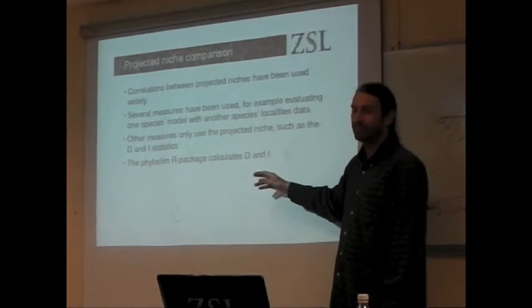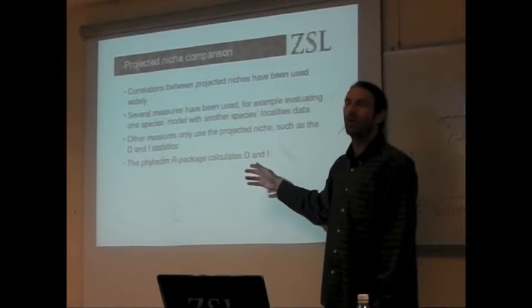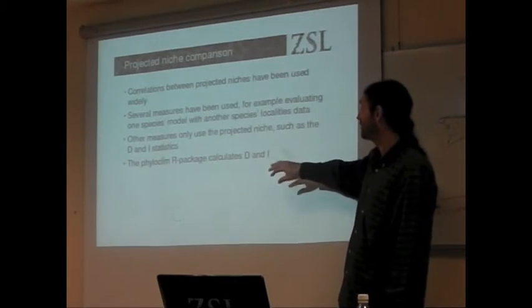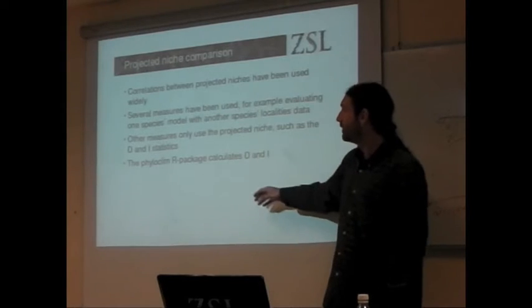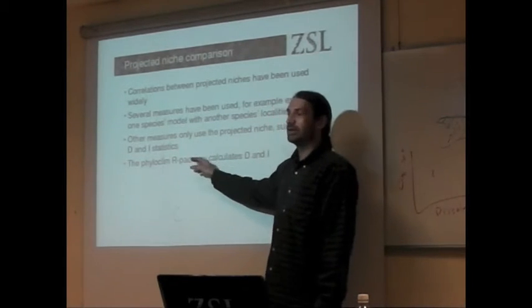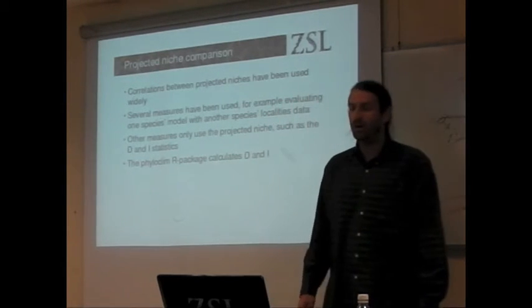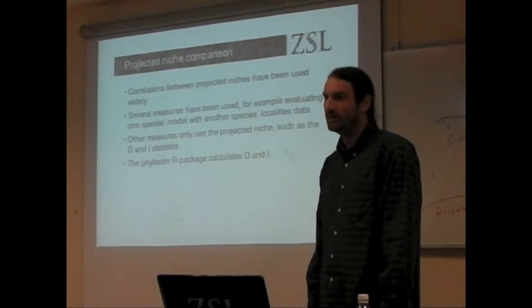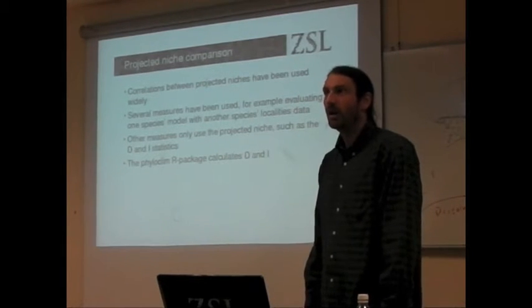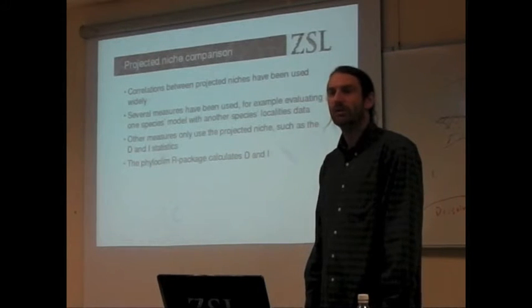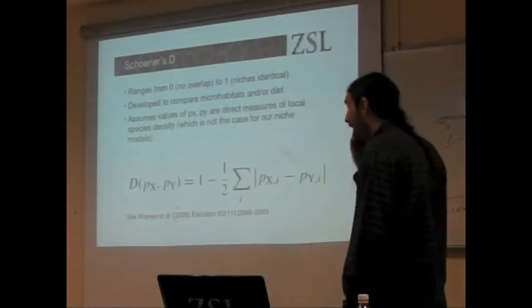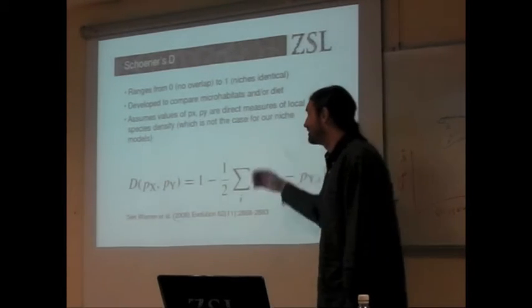It's the Warren et al. publication that describes this. I've got the reference on the other slide. So here you can form these D and I statistics using R and there's other software tools that allow you to do this. I think ENM tools does it as well.